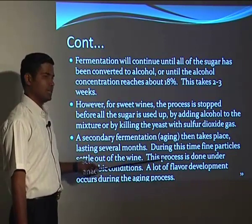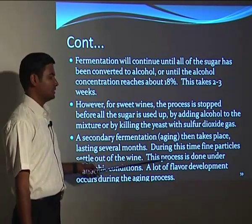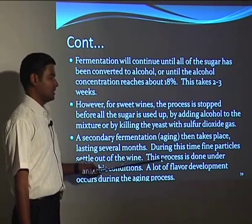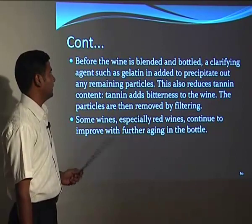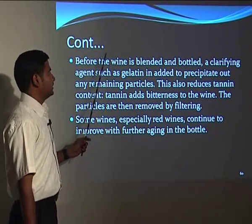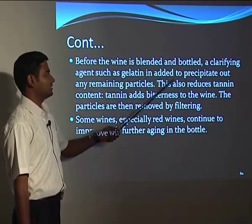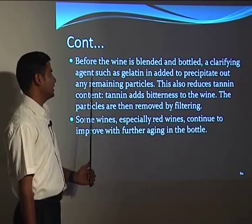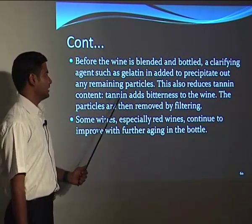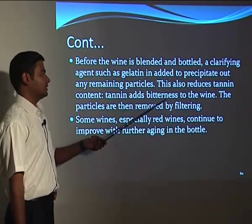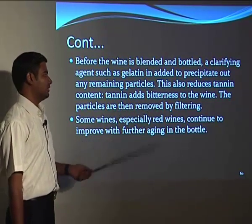The more the age of the wine, the more the taste, and as the taste improves, so does the price. Before wine is blended and bottled, a clarifying agent such as gelatin is added to precipitate out any remaining particles. This also reduces the tannin content, as tannin adds bitterness to the wine. The particles are then removed by filtering.